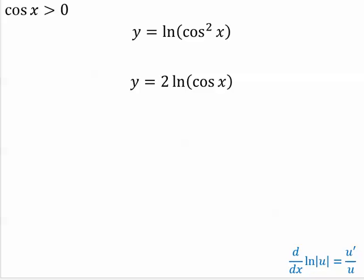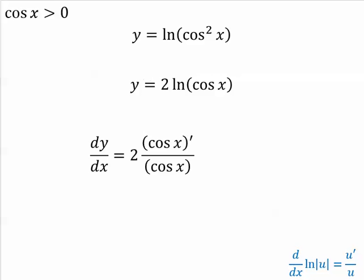You could have done this problem a different way. We could have first started by using the properties of logs. Then, in that case, u is equal to cosine x. So, u prime over u. Now I'm only taking the derivative of cosine, which is negative sine. And I'm done. A little bit faster.